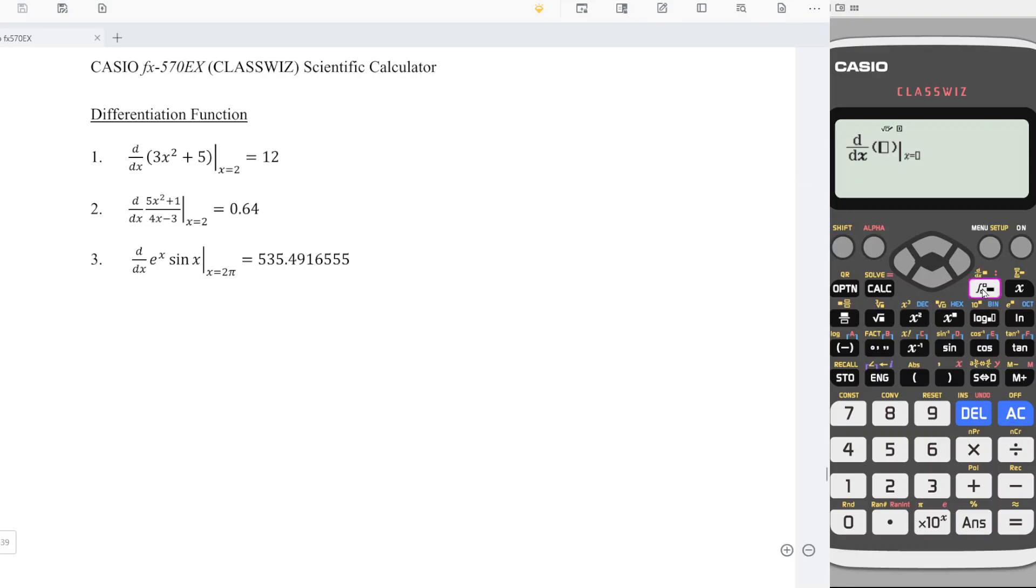First, press Shift, integrate to get differentiate. Input the function 3x² plus 5, press right, and key in the point 2. And we should obtain the correct value, 12.